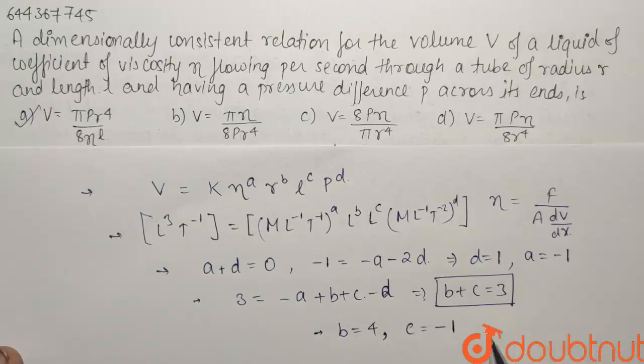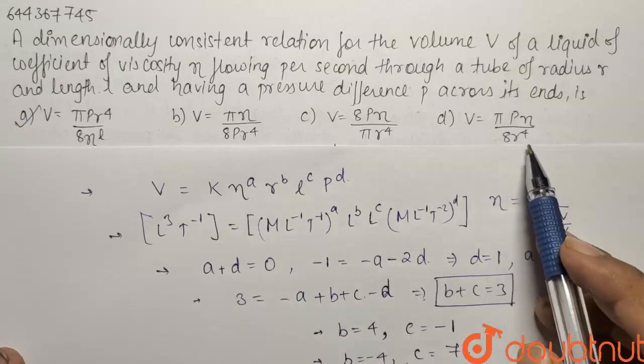So our option A will be a correct option and if I have a look at taking the value of B to be minus 4 that is in some cases. So if I take B minus 4 then the value of C comes out to be equals to 7 that is not present in any of the equations.